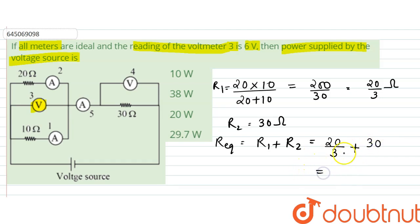So that is 110 by 3 ohms. So the 6 volt across this is a 6 volt potential difference.